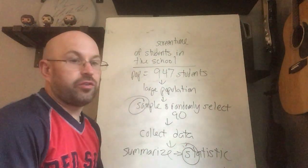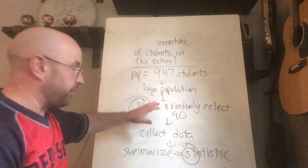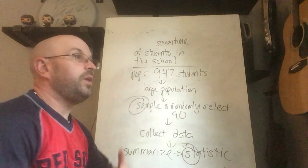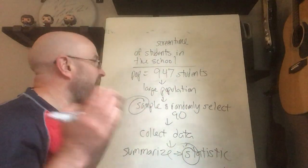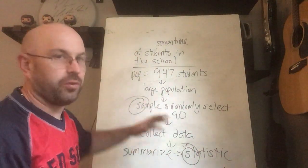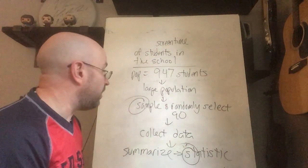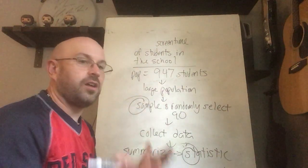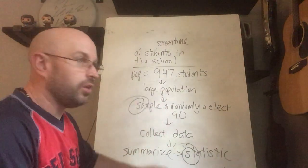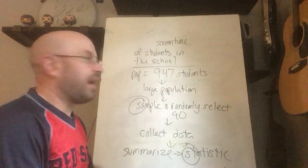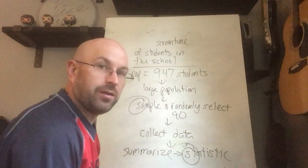So these are some of the basic introductory vocabulary terms you want to know going into a statistics course. A statistic summarizes a sample, and we perform samples when we can't perform a census. A census is when you ask everybody — if your population of interest is too big, that's when you perform a sample. Small group, get information, summarize that small group, you get a statistic. Eventually in this course you'll learn how to take that statistic and generalize it to an entire population, coming pretty close to the average or median screen time for your entire school by asking just 90 out of 947 students.